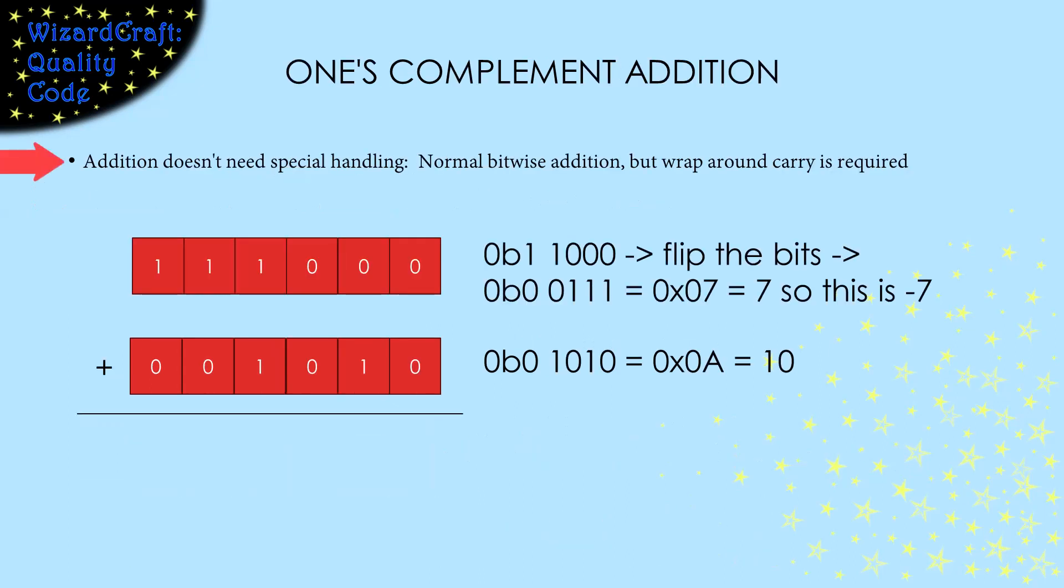With one's complement, we no longer need separate addition and subtraction circuits. We can add positive and negative numbers with normal binary arithmetic. With one extra trick, the carry has to be wrapped around to the bottom most bit.